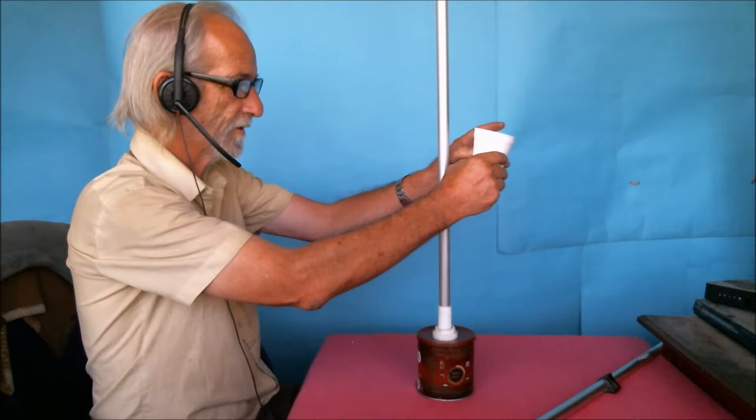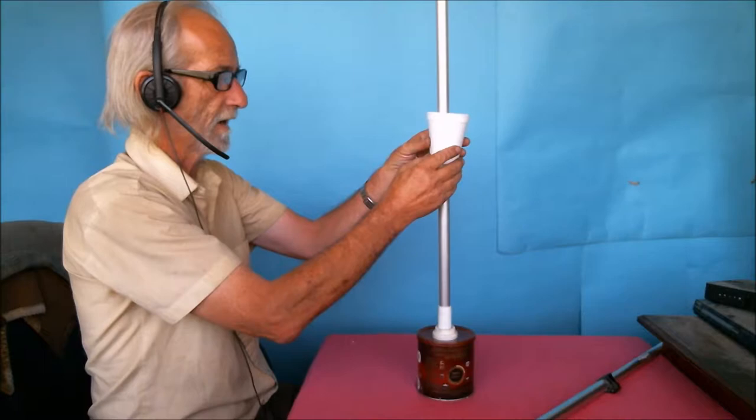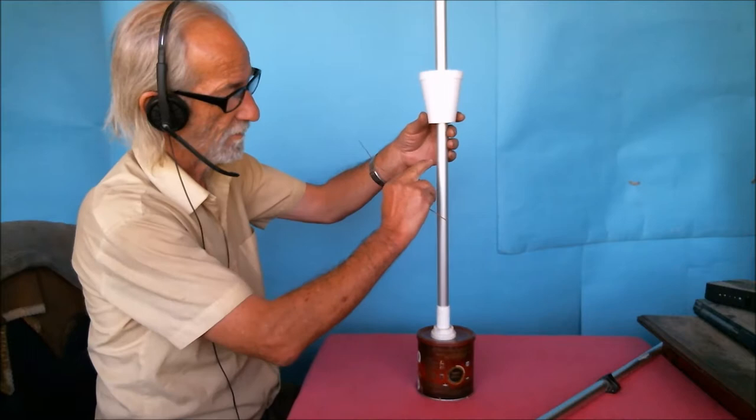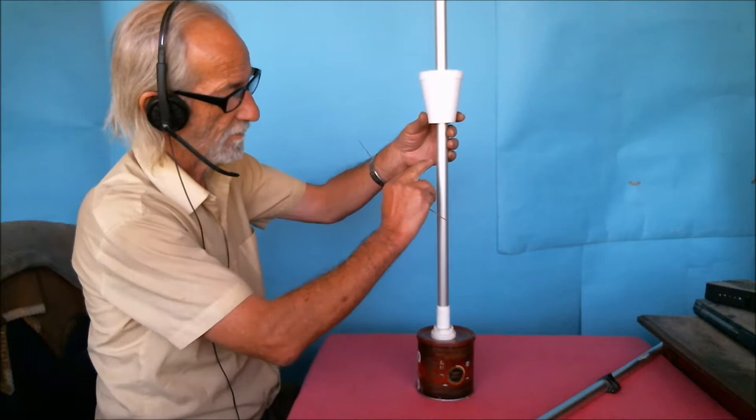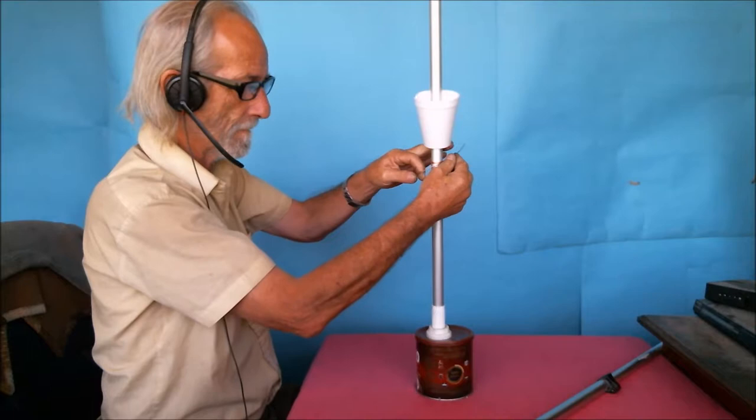And then we can put it on to the leg. Okay, what we have to do now is tie a ring around here. It can be made with wire, with string, with wool, whatever you prefer.